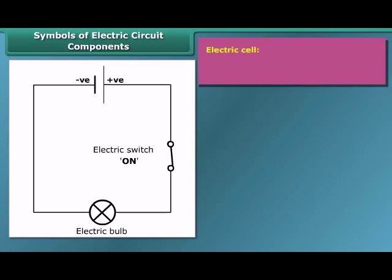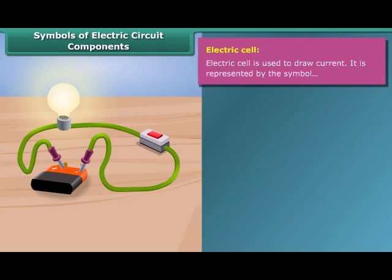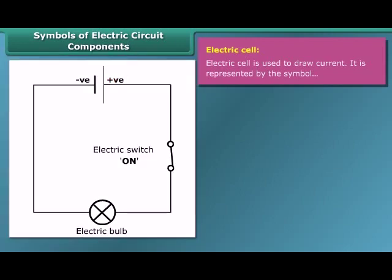An electric cell is a simple device which is used to generate electricity. Electricity is produced by chemical reaction. It has a positive terminal and a negative terminal. In the symbol of the electric cell, the longer line represents the positive terminal and the thicker, shorter line represents the negative terminal.